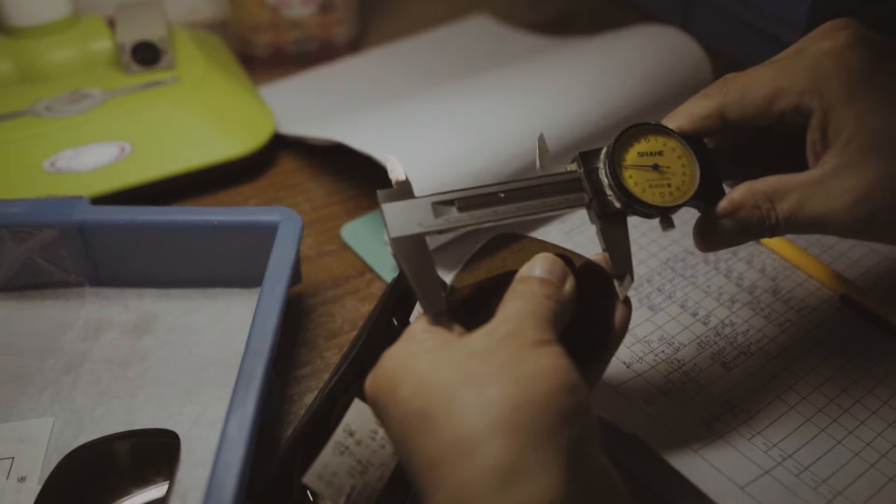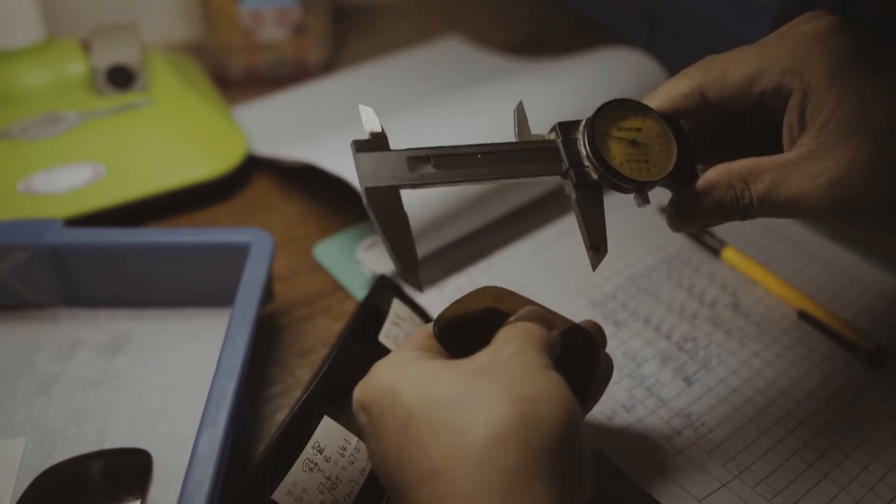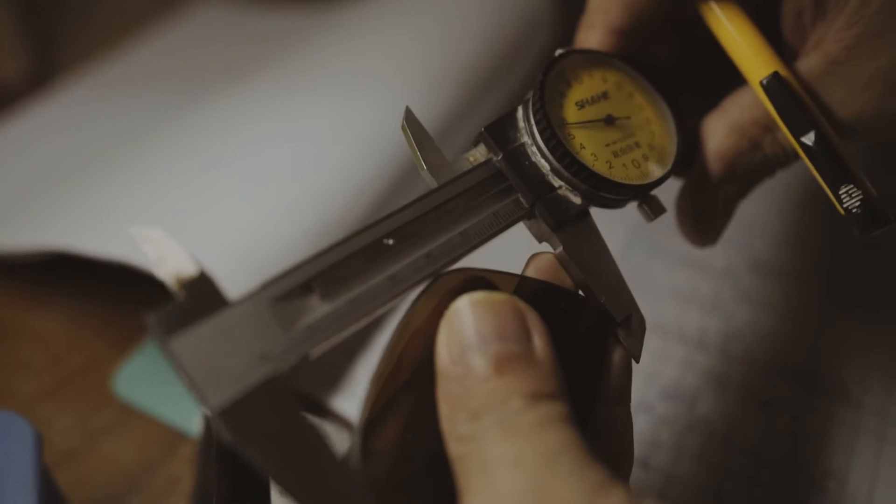Quality control round 3 ensures lenses are the correct height, width and length. This ensures each lens fits seamlessly into their frame.